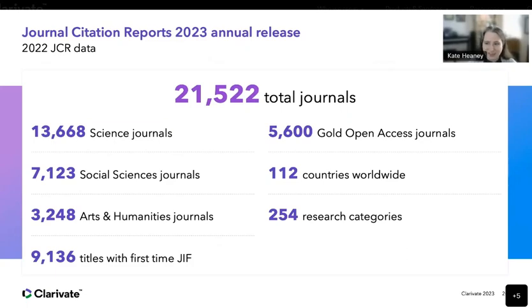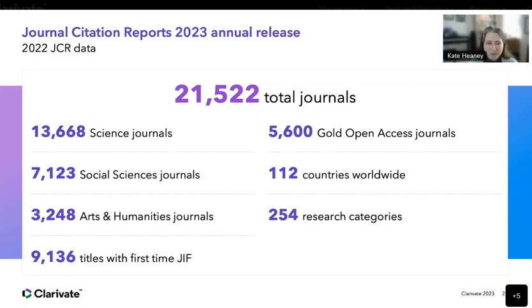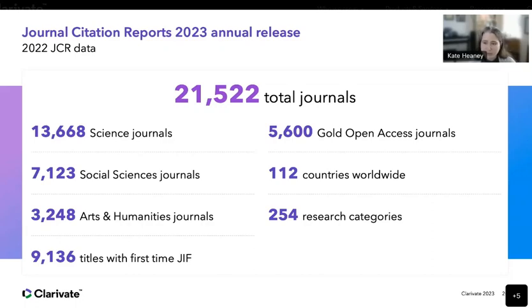This year's release consists of 21,522 total journals, of which 13,668 are in the sciences, 7,123 in the social sciences, and 3,248 in the arts and humanities. These journals are published out of 112 countries worldwide in all 254 categories in the Web of Science and the JCR. Over 5,600 of these journals are gold open access. And of these, 9,136 will receive a JIF for the first time.